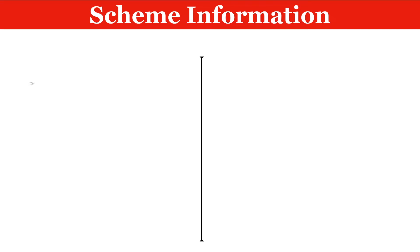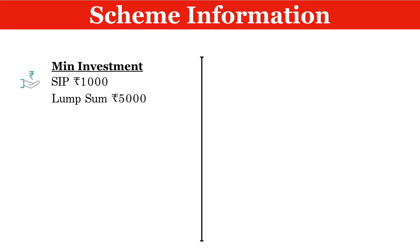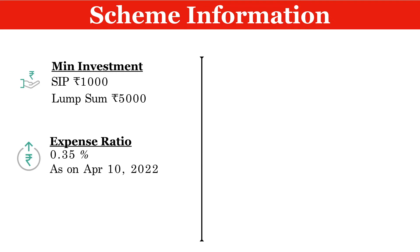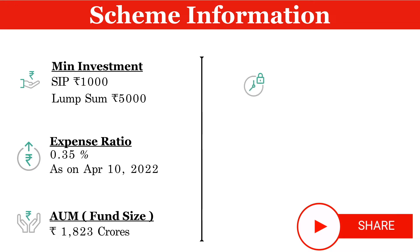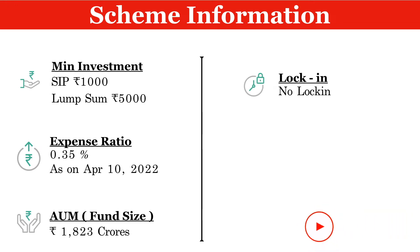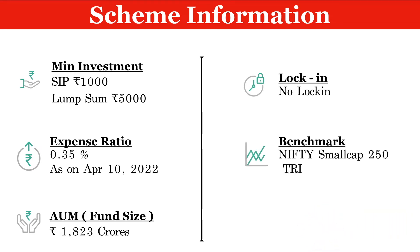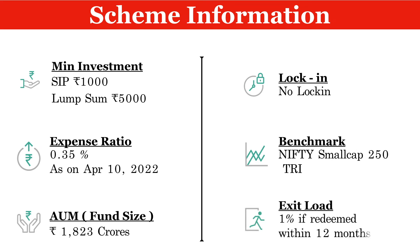In this section we will understand the scheme information. The minimum SIP has to start with 1,000 rupees, and in case of lump sum it has to start with 5,000 rupees. The expense ratio associated with this mutual fund is 0.35% as on April 10, 2022. The assets under management are around 1,823 crores. There is no lock-in period. The benchmark being tracked is the Nifty Small Cap 250 Total Return Index. There is an exit load of 1% if you redeem your investment within 12 months.